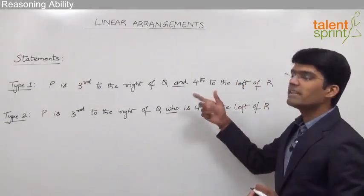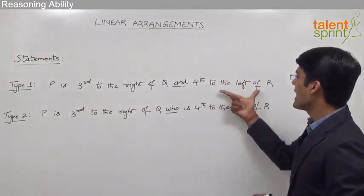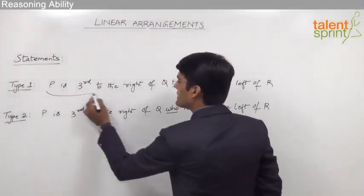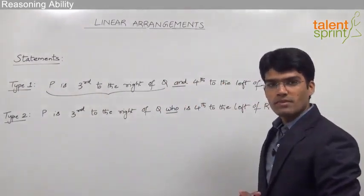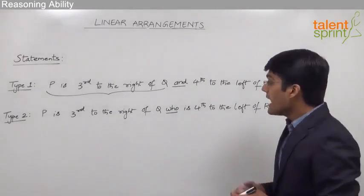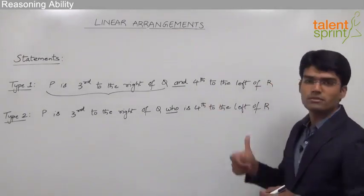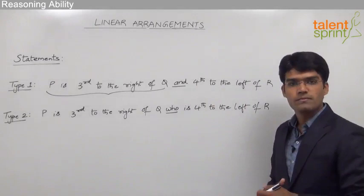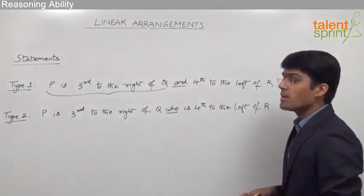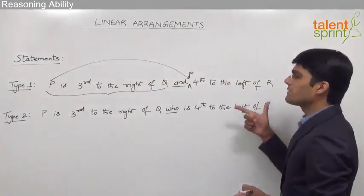Taking the first statement — 'P is third to the right of Q and fourth to the left of R' — it can be divided into two parts. The first part is: P is third to the right of Q. The second part is: fourth to the left of R. The question is, who is fourth to the left of R — is it P or Q? As discussed in circular arrangements, whenever the word 'and' is used we always refer to the first person. So P is fourth to the left of R.